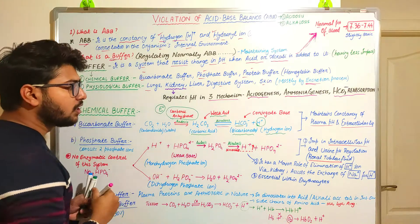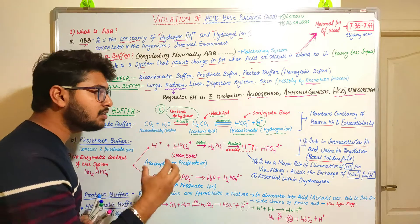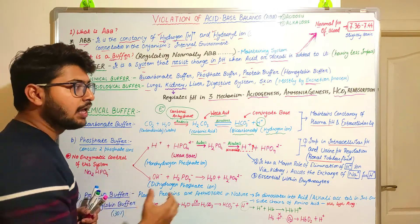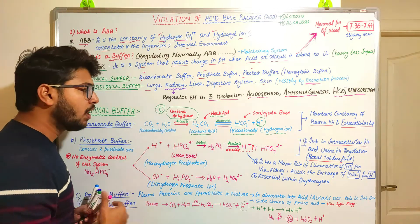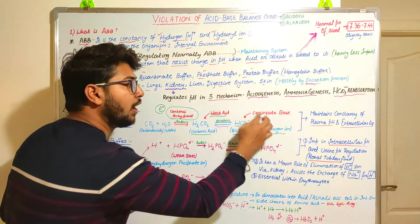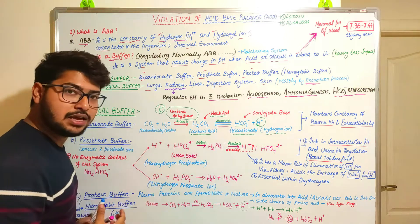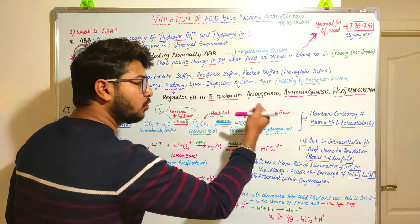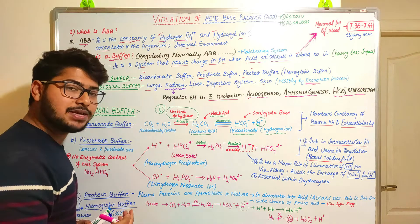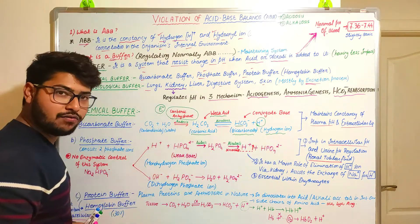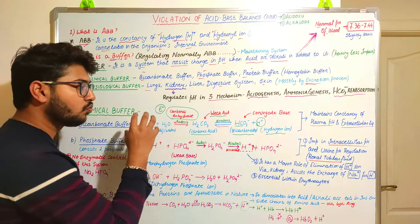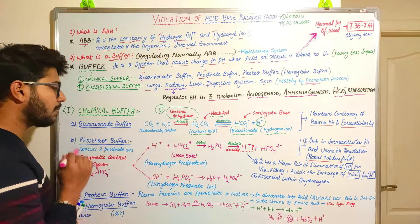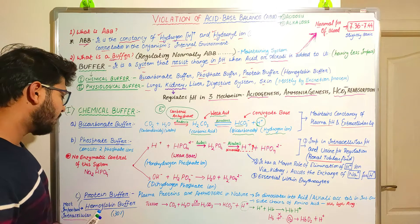This reaction is completely reversible according to the changing environment. If the condition is alkaline, the reaction moves forward to increase acidic content — meaning hydrogen ion content increases. If the condition is more acidic, the reaction moves backward to maintain basic nature. This is the complete mechanism through which the bicarbonate buffer maintains pH.